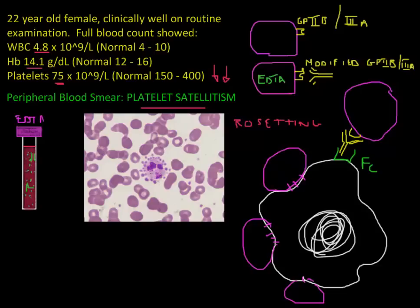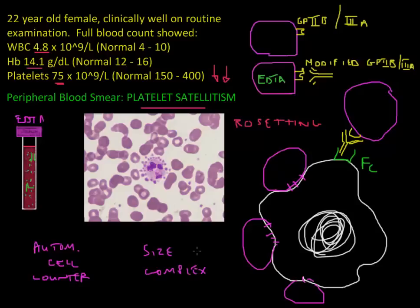When you put this tube of blood through an automated cell counter, the counter measures cells as they come through, looking at cell size and complexity — as explained before in the talk on platelet clumping, which is a slightly different phenomenon. The platelets will now be counted as part of the white blood cells and will not be counted individually. Therefore the platelet count will be falsely low — note: falsely decreased.